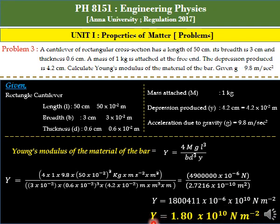1.80 times 10 to the power 10 newton meter to the power minus 2. So Young's modulus value is 1.80 times 10 to the power 10 newton meter to the power minus 2. This is the answer to the problem.